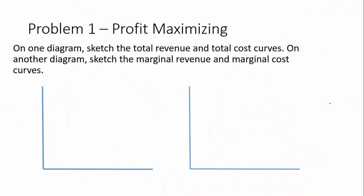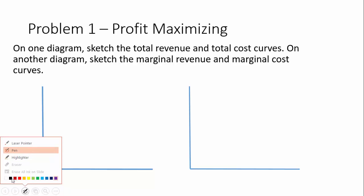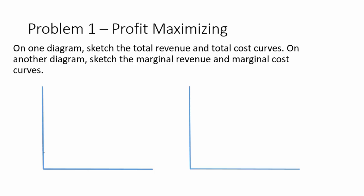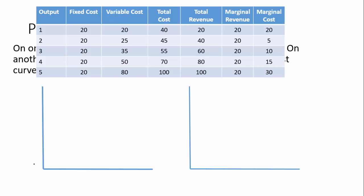The final part of this problem is to sketch out the total revenue and total cost curves, and the marginal revenue and marginal cost curves. Let's lay out the graphs. For the horizontal axis we have one, two, three, four, and five units of output. The vertical axis is in dollars, and we'll do it in $20 increments: 20, 40, 60, 80, 100.